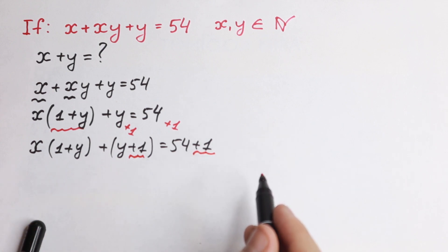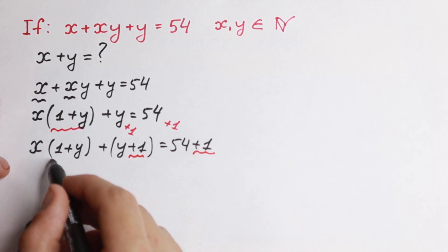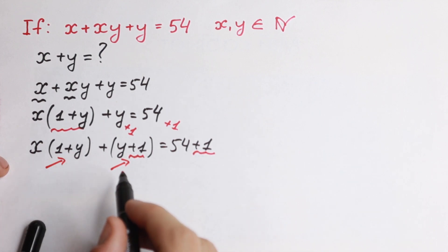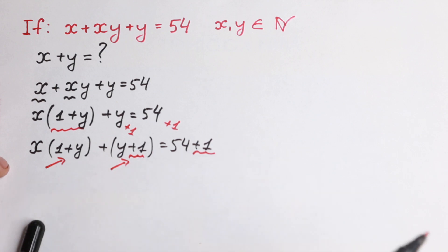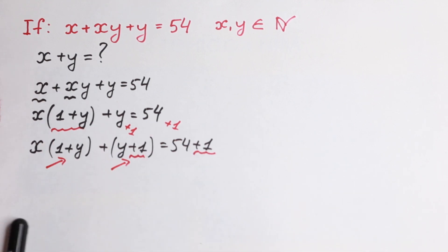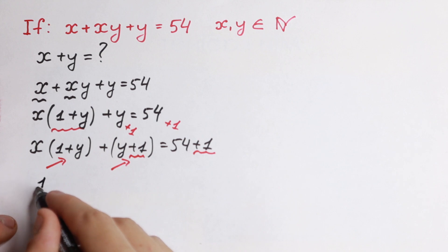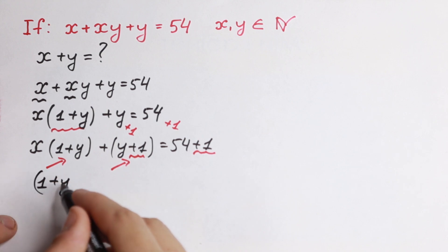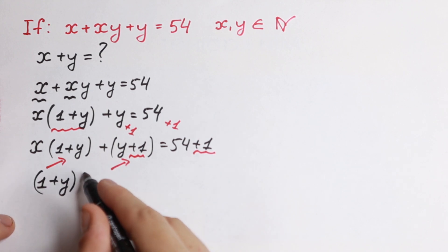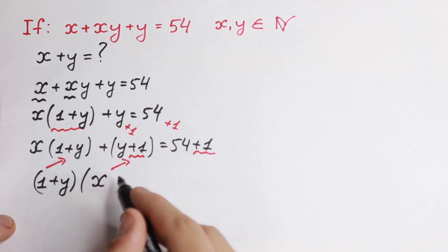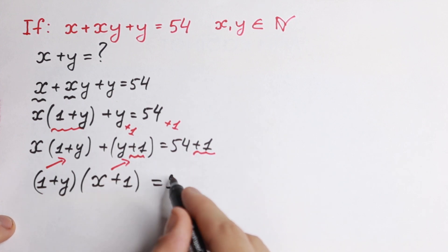We just added 1 to both sides, so nothing changed. But take a look — this element and this element are the same, because (1 plus y) equals (y plus 1). So we can easily factor out this expression: (1 plus y) times (x plus 1) equal to 55.